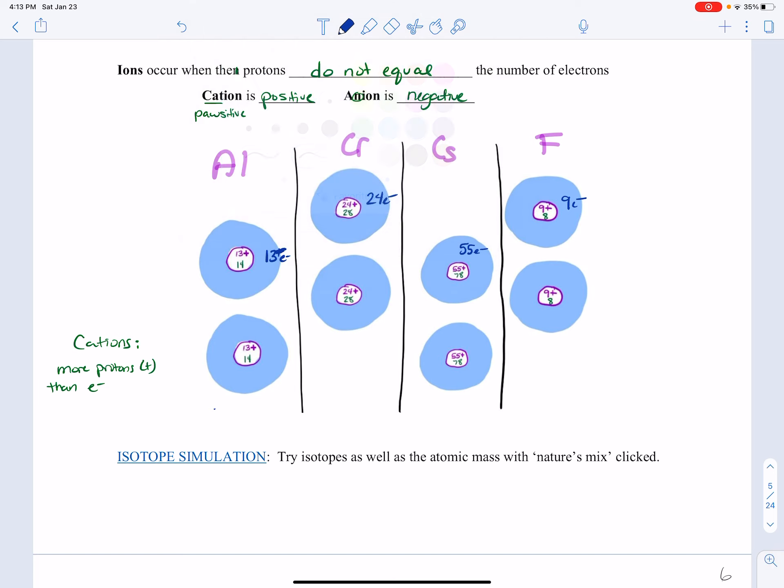So if we look right here, we start off with 13. So we just need a number that's less than 13. It could be 12. So if we did 12, that would be a plus one ion.